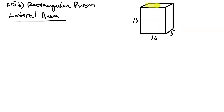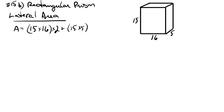We're not including the top and the bottom. The front face is fifteen by sixteen and there are two of those — front and back. The side panel is fifteen high and five wide, so that's fifteen times five, and again there are two of those. Calculating that out we end up with four hundred and eighty plus one hundred and fifty, which adds up to six hundred and thirty units squared.